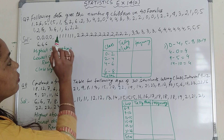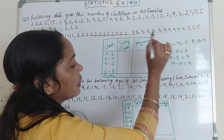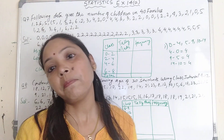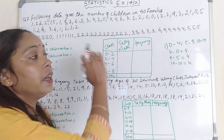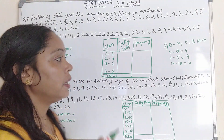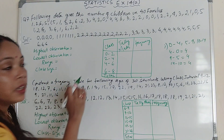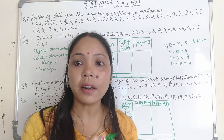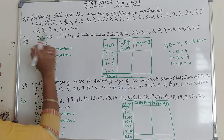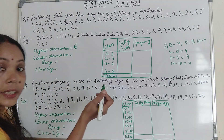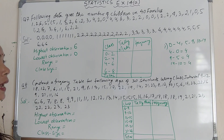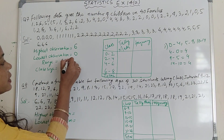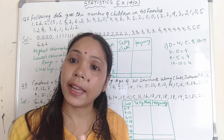I have arranged the data in ascending order: 0, 0, 0, then all the 1s, all the 2s, all the 3s, all the 4s, all the 5s, and all the 6s from the given data. After arranging in ascending order, now it is very easy to find the highest observation. The highest value here is 6, and the lowest value is 0. Range means highest minus lowest, so 6 minus 0 equals 6. So here the range is 6.